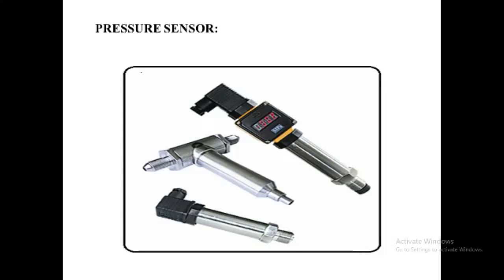There is also a category of pressure sensors designed to measure in a dynamic mode for capturing very high-speed changes in pressure. For example, applications for this type of sensor include measuring combustion pressure in an engine cylinder or in a gas turbine. These sensors are commonly manufactured from piezoelectric materials. Some pressure sensors, such as those found in speed traffic enforcement cameras, function in a binary on/off manner — when pressure is applied, the sensor acts to complete or break an electric circuit. This type of sensor is also known as a pressure switch.